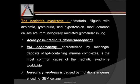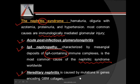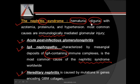In nephritic syndrome, the suffix '-itic' means inflammation, so it is a situation of glomerular inflammation. The features are hematuria, oliguria with azotemia, proteinuria, and hypertension. The most common causes are immunologically mediated injury, including acute post-infectious glomerulonephritis and IgA nephropathy — characterized by deposition of IgA-containing immune complexes, which is the most common cause. We also have hereditary nephritis, caused by mutations in the gene coding for collagen. The typical finding is hematuria; because of the increased permeability gap, we have oliguria. Proteinuria is present but not as significant as in nephrotic syndrome.